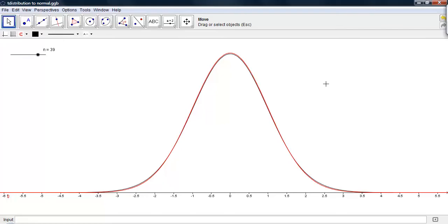This is the idea of how degrees of freedom, as they increase, cause the t-distribution to approximate the normal distribution.